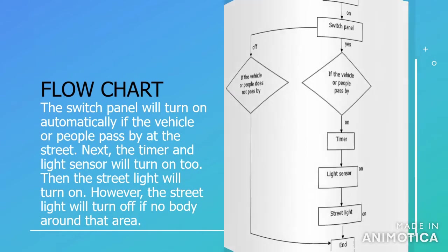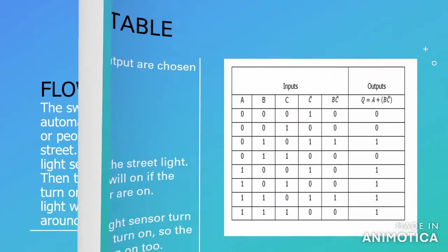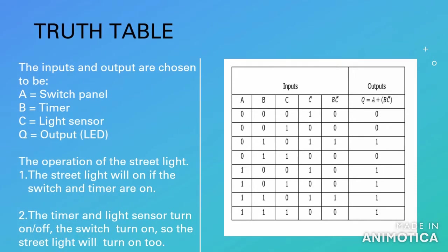Next, the truth table. The inputs and output are chosen to be: A stands for switch panel, B stands for timer, C stands for light sensor, and Q stands for output LED. This shows the operation - when the switch and timer turn on, the streetlight will turn on too.